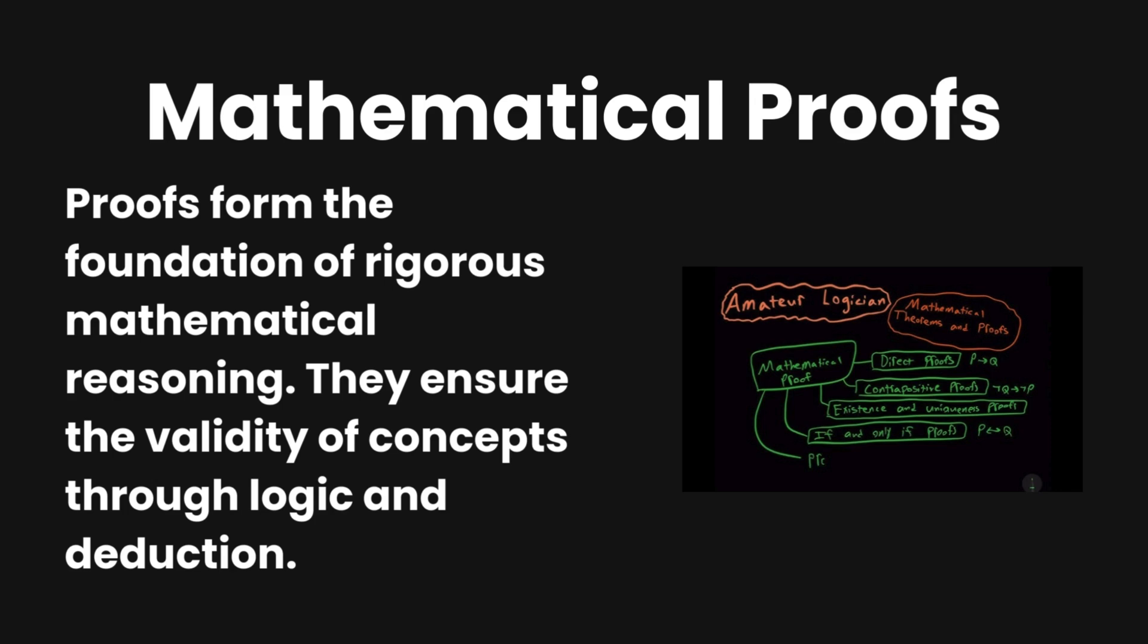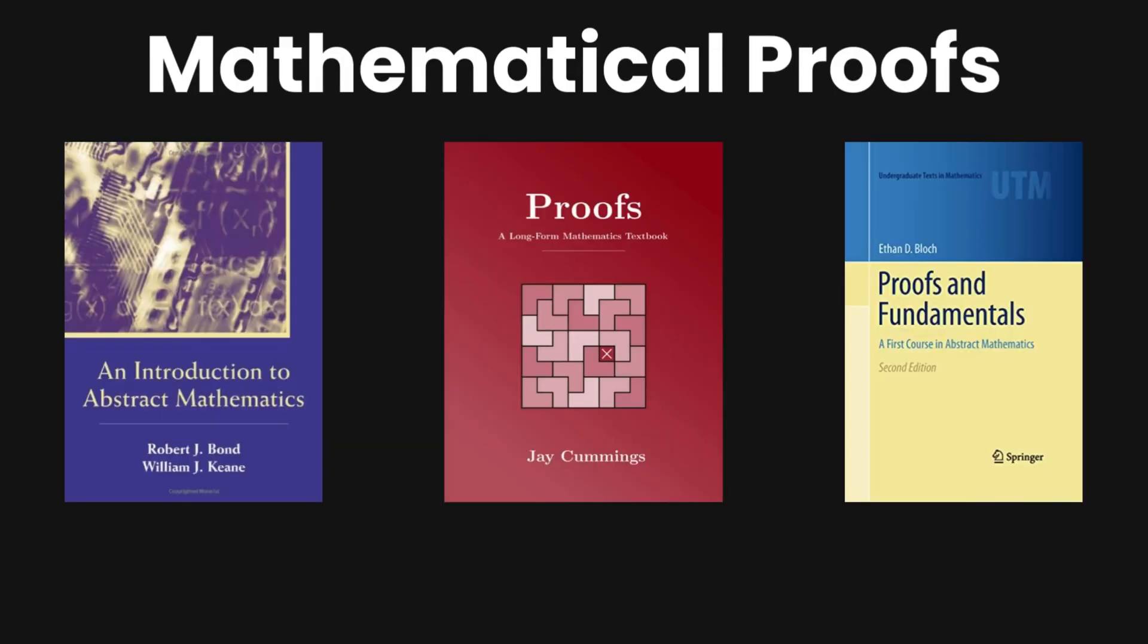And the proofs in mathematics, they form the foundation of rigorous mathematical reasoning. And they ensure the validity of concepts through logic and deduction. So you have to learn mathematical proofs, and there's a lot of reasons why you need to learn them. And there are a few good books on mathematical proofs and abstract mathematics in general. I really love the book, A Long-Form Mathematics Proofs, a textbook by Jay Cummings. It's one of the best. The red one, the red book by Jay Cummings is one of the best one.